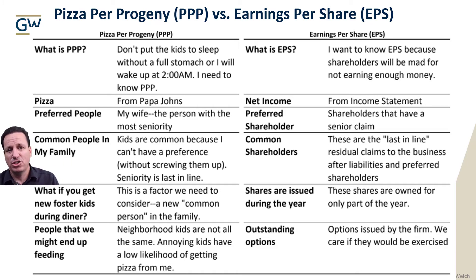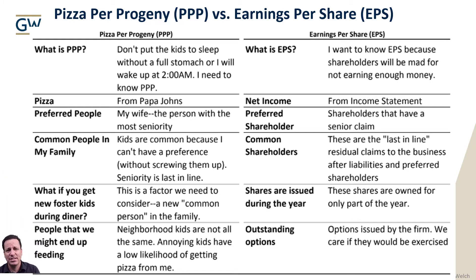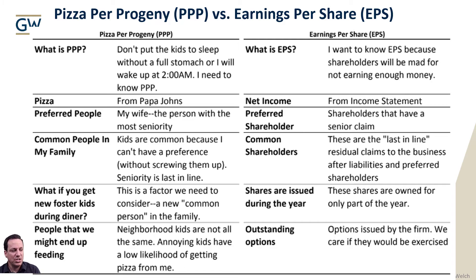We also have people who may or may not show up at any given time — kids showing up with varying probabilities depending on who they are and how I'm feeling. The same thing applies to options outstanding. We have shares with stock options — options outstanding — and those options have different probabilities of being exercised. They get exercised based on one rule: if they make more money. Someone will exercise these options if they make more money.